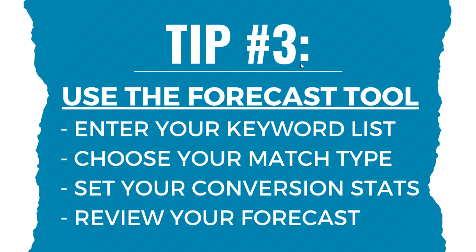Tip number three: you can use the forecast tool in the Google Keyword Planner. All you need to do is make sure you have a keyword list, choose your match type, set the conversion stats for your overall website, and then review your forecast.